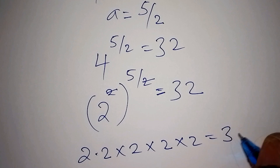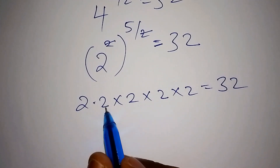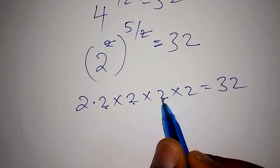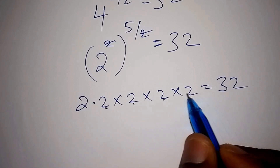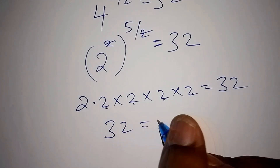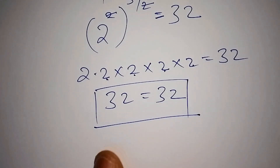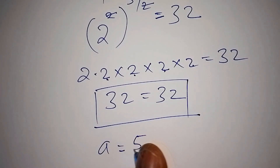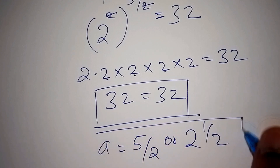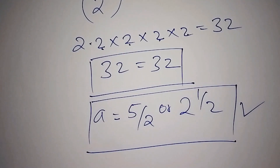That is 2 multiplied by 2 multiplied by 2 multiplied by 2 multiplied by 2 is equals to 32. So 2 multiplied by 2 is 4, 4 multiplied by 2 is 8, 8 multiplied by 2 is 16, and 16 multiplied by 2 is 32. So our final answer is 32 equals 32. Meaning that we are correct when we say our value for a is equals to 5 over 2 or 2 and a half. If you really loved how we worked out this math problem, please don't forget to subscribe to our channel. We'll see you next time.